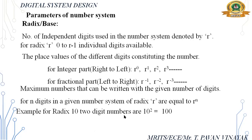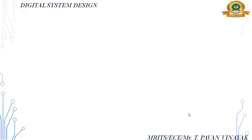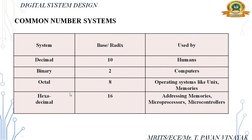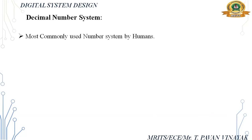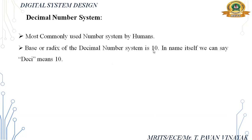For radix 10 with two digits: 10 squared equals 100. The common number systems available are decimal, binary, octal, and hexadecimal. For decimal the radix is 10, binary is 2, octal is 8, hexadecimal is 16. Decimal is used for human purposes, binary for computer purposes, and octal for operating systems like Unix memory. Hexadecimal is also used in memory contexts.